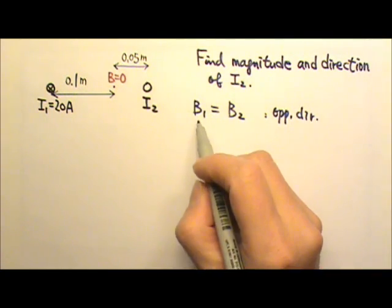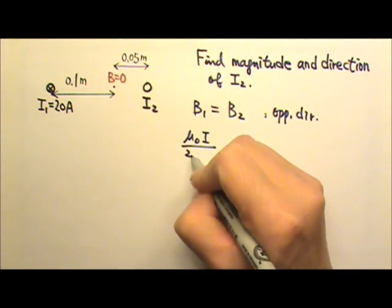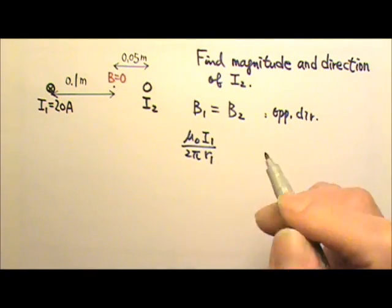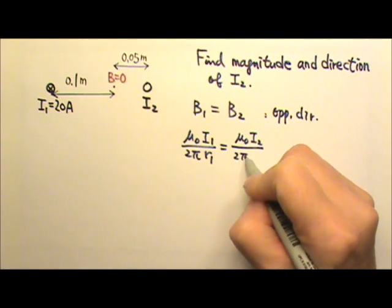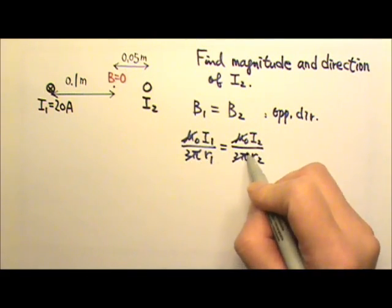The magnetic field produced by long straight current is mu knot I over 2 pi R. So this is mu knot I1 over 2 pi R1, and the other one is mu knot I2 over 2 pi R2. So the mu knot can cancel, the 2 pi's can cancel.